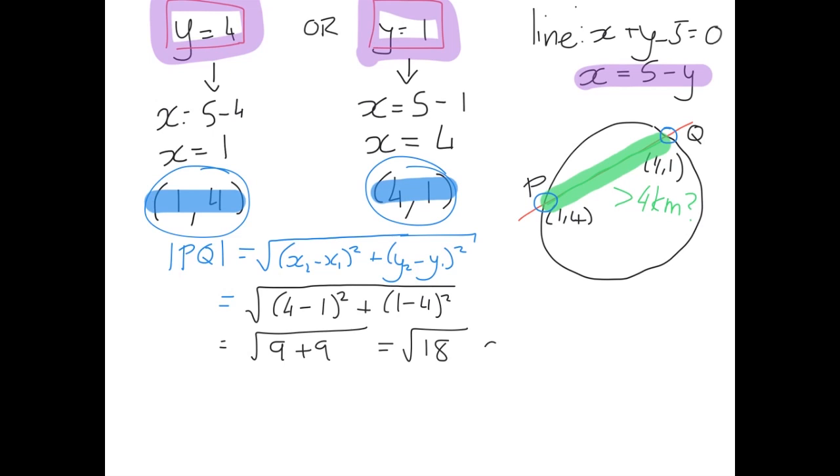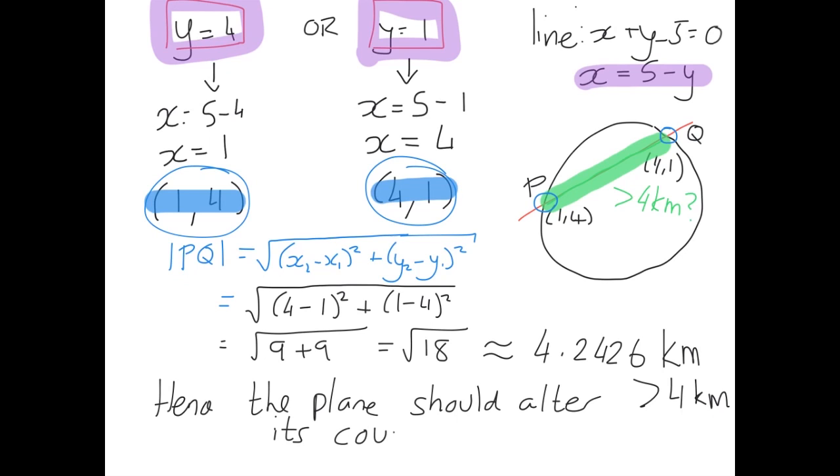If you work that out in your calculator, that's approximately 4.2426. We remember at the start of the question we were told each unit is one kilometre, so that's 4.2426 kilometres, which is bigger than 4 kilometres. Hence, the plane should alter its course. And that is the end of that question.